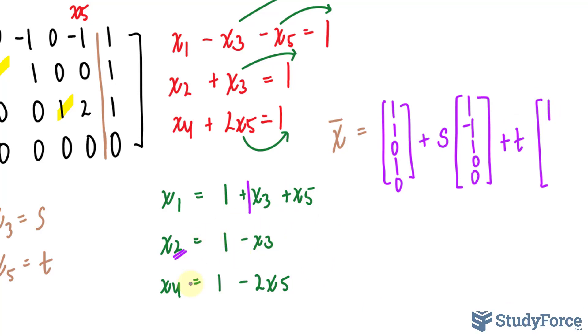No x sub five in this equation. There is an x sub five here, it's minus two. And there's one over here, it's a one.